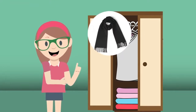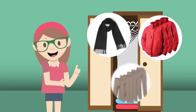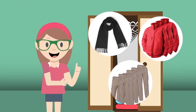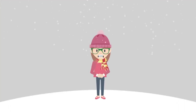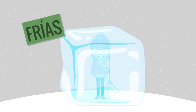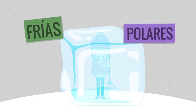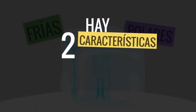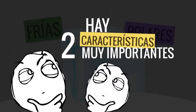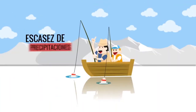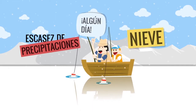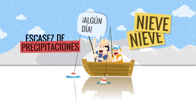Helga, agarra tu chalina, tus tres casacas polares y cinco pantalones de lana, porque haremos un viaje a las zonas frías o polares. Para comenzar, hay dos características muy importantes que debes tener en cuenta: que son zonas de temperaturas muy bajas y que hay escasas precipitaciones. O sea, ahí todo es nieve y más nieve. Es normalísimo pasar por aquí y ver que estamos bajo cero.